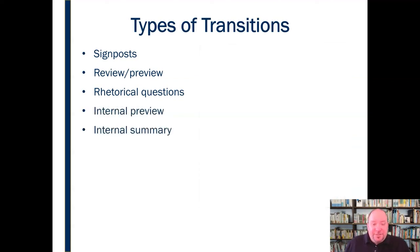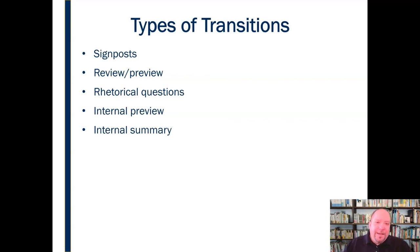The last two types of transition are internal preview and internal summary. You won't use these a lot in fairly basic speeches, but if one or more of your main points is particularly complex and involves several steps or items, an internal preview can help by saying 'here's what we're going to be talking about — this main point involves A, B, and C.' An internal summary at the end of that point reviews 'we just talked about A, B, and C.' Keep these in mind as tools when necessary.